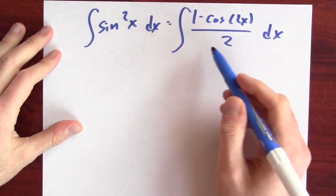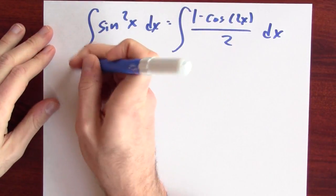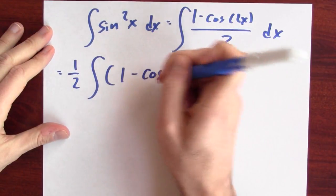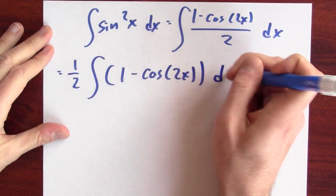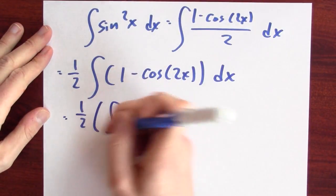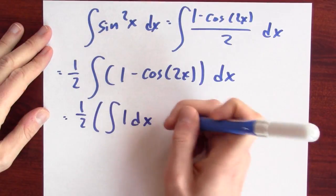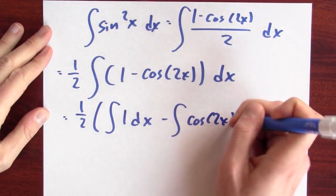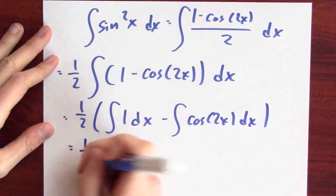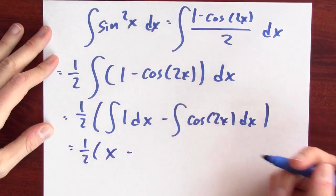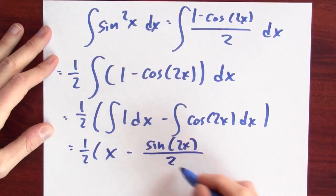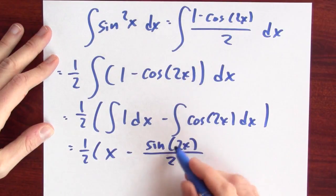This is the anti-derivative of one-half times something, so I can pull out that factor of one-half and just figure out how to anti-differentiate 1 minus cosine of 2x. This is an anti-derivative of a difference, which is the difference of anti-derivatives. The anti-derivative of 1 is just x. The anti-derivative of cosine 2x is sine of 2x, but I have to divide by 2 to compensate for the chain rule.